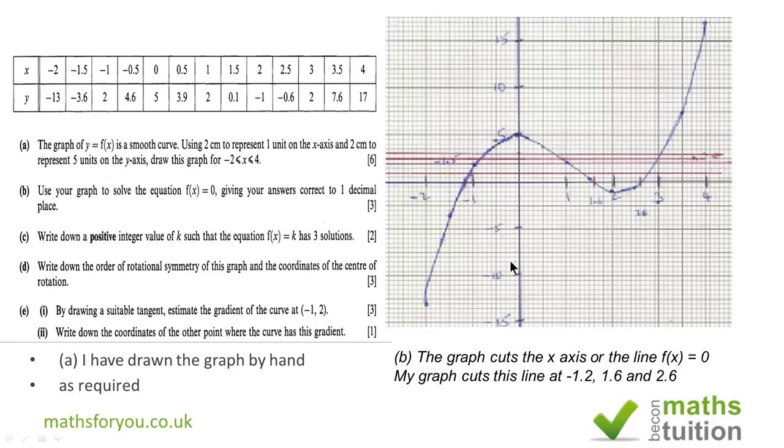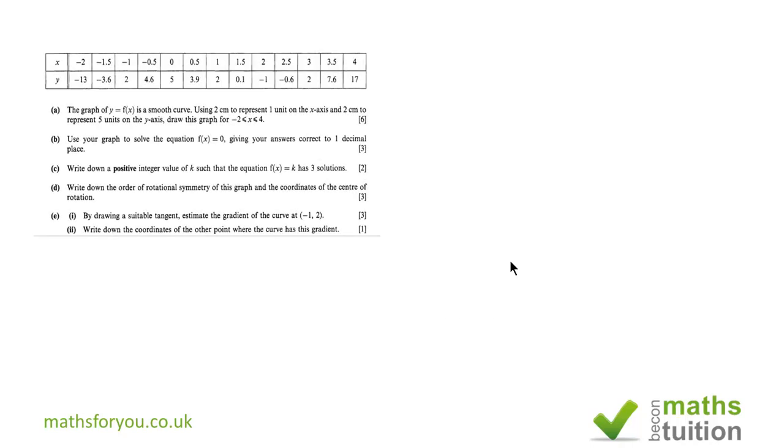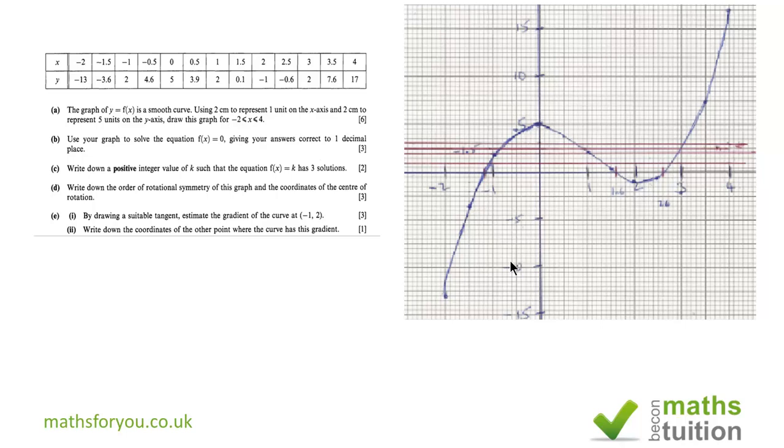Okay, moving on to part C. And it says to us, if I just paraphrase, it says to us draw a line such that it's going to cut the graph in three different positions. And if you think about it, the line y equals zero is the x-axis. And we've done that already. And that cut the graph as shown before. So what it's actually saying to us is to draw a graph, y equals something, such that it's going to cut the graph in three positions. And it's got to be, k has got to be an integer.